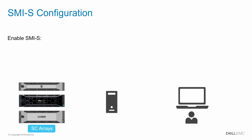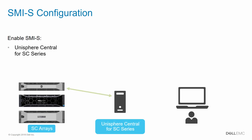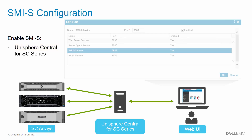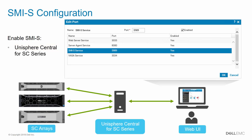Enabling SMIS is quick and easy. First, we'll show how to do this if you are using Unisphere Central. Simply log in to the Unisphere Central Web UI, and under Edit Port, click the SMIS service to select it, check the Enabled box, and click OK.